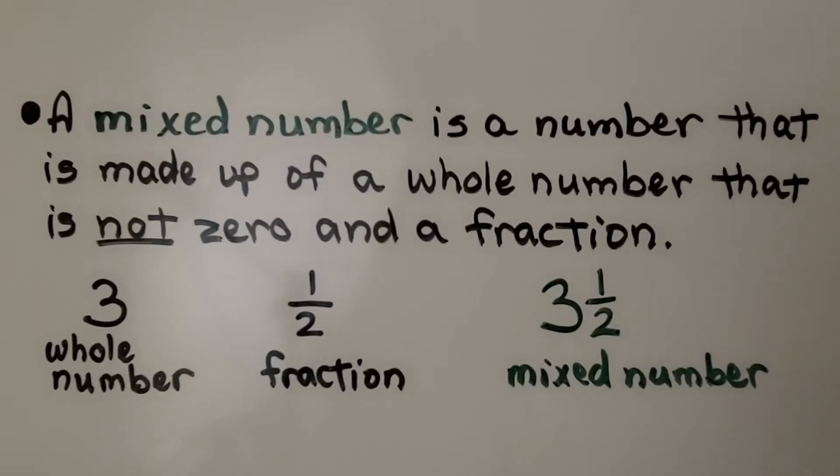So as many of you know, a mixed number is a number that is made up of a whole number that is not zero and a fraction. Three and a half is a mixed number.